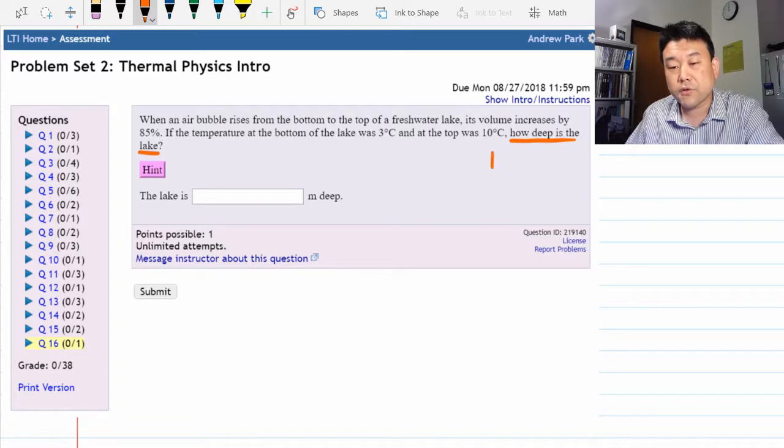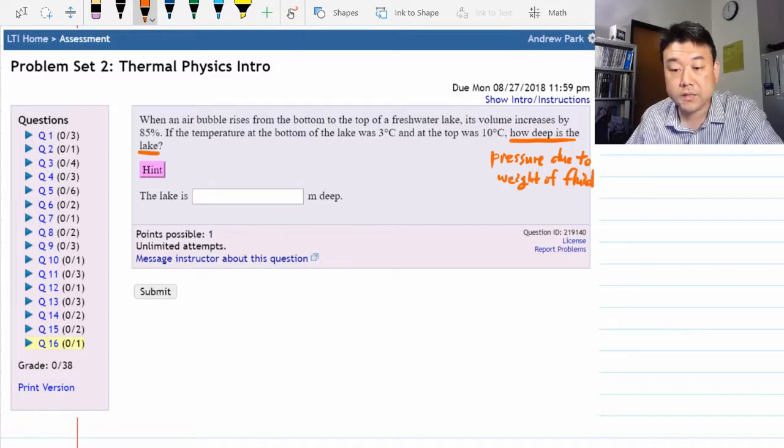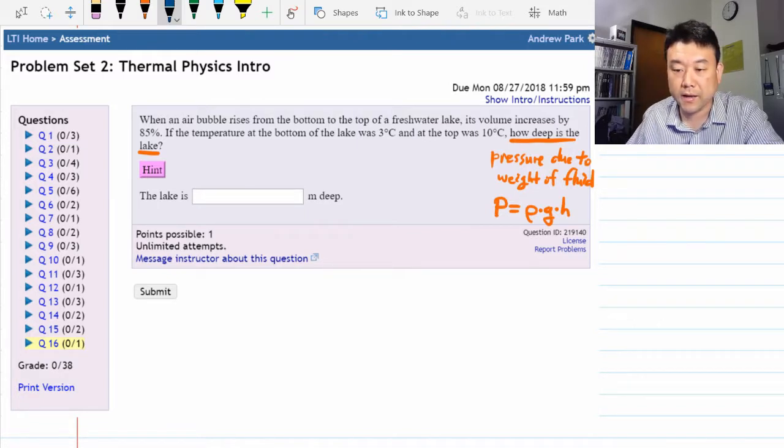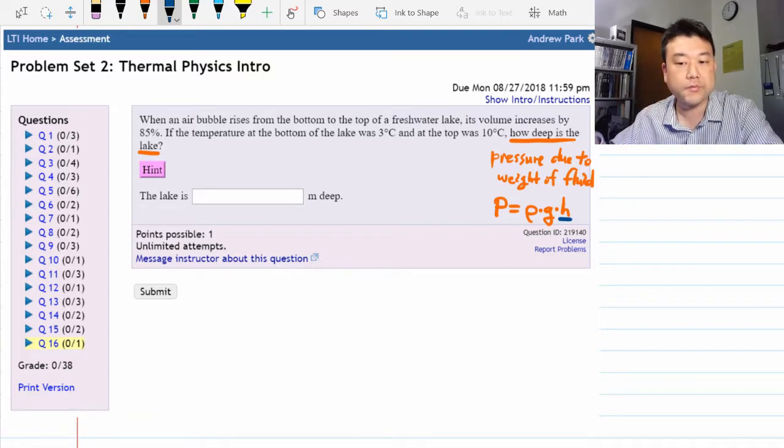Something about pressure due to weight of fluid and there was this formula: pressure is equal to density of fluid times gravitational acceleration times the height. This is why height is coming in. So that had to be in the back of your mind and you had to remember that.